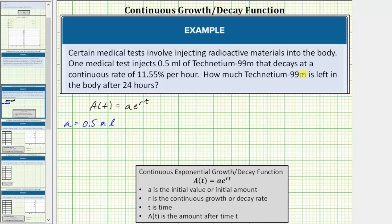The material decays at a continuous rate of 11.55% per hour, which means r, the decay rate, is negative 11.55%. Because it's decaying, the rate is negative.